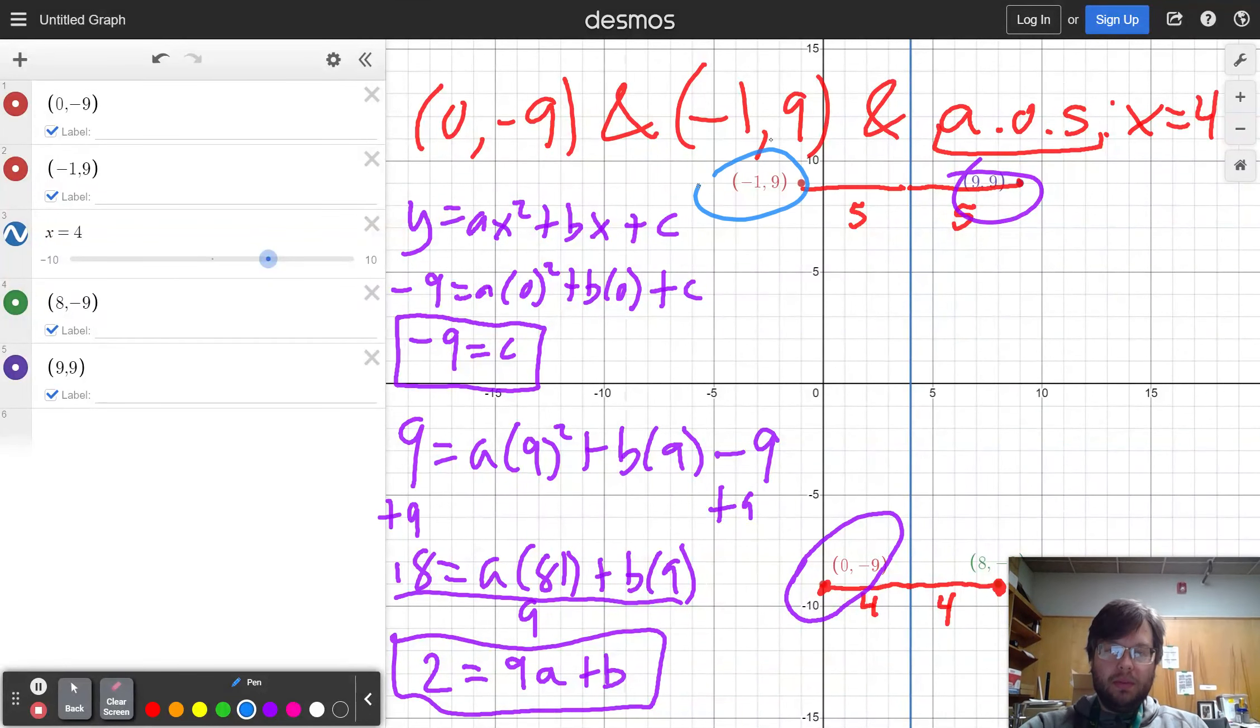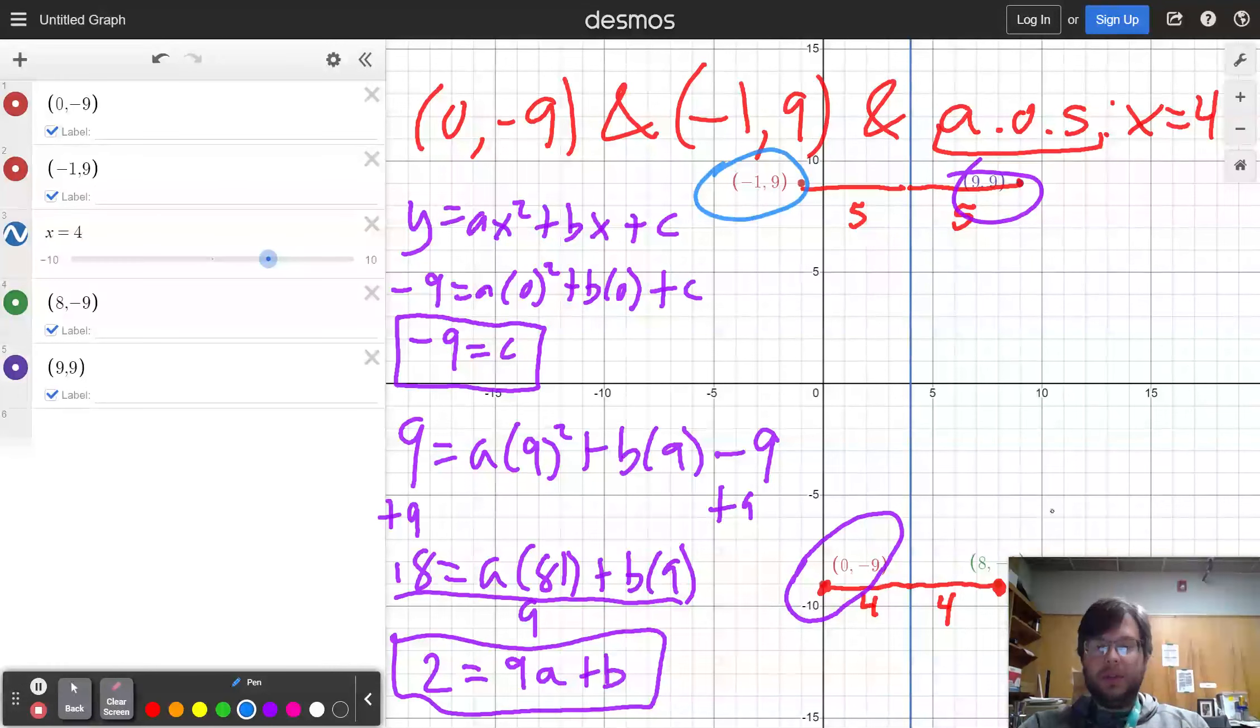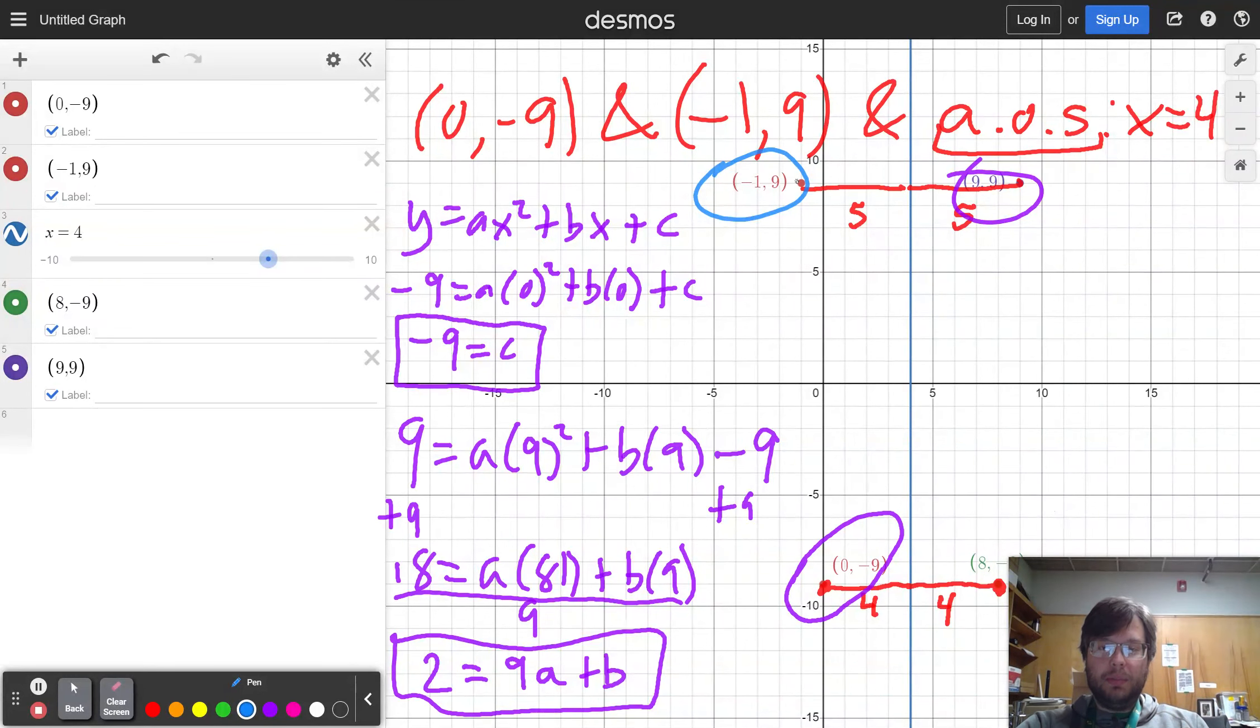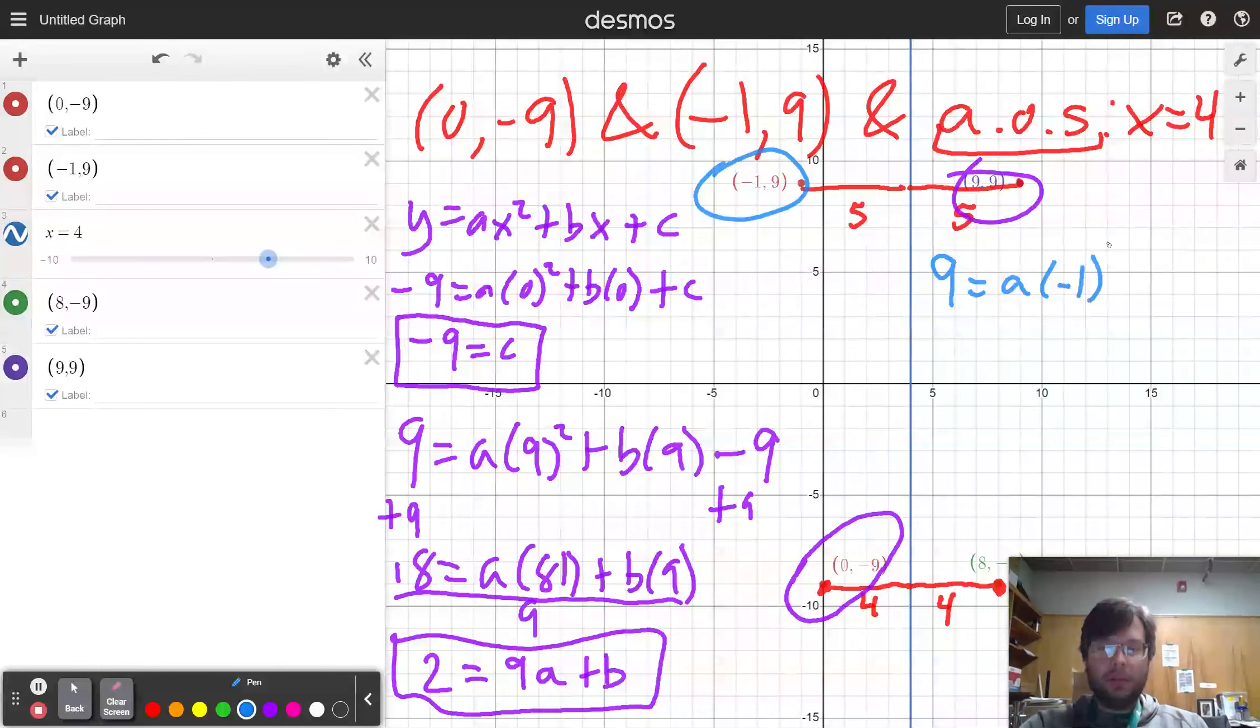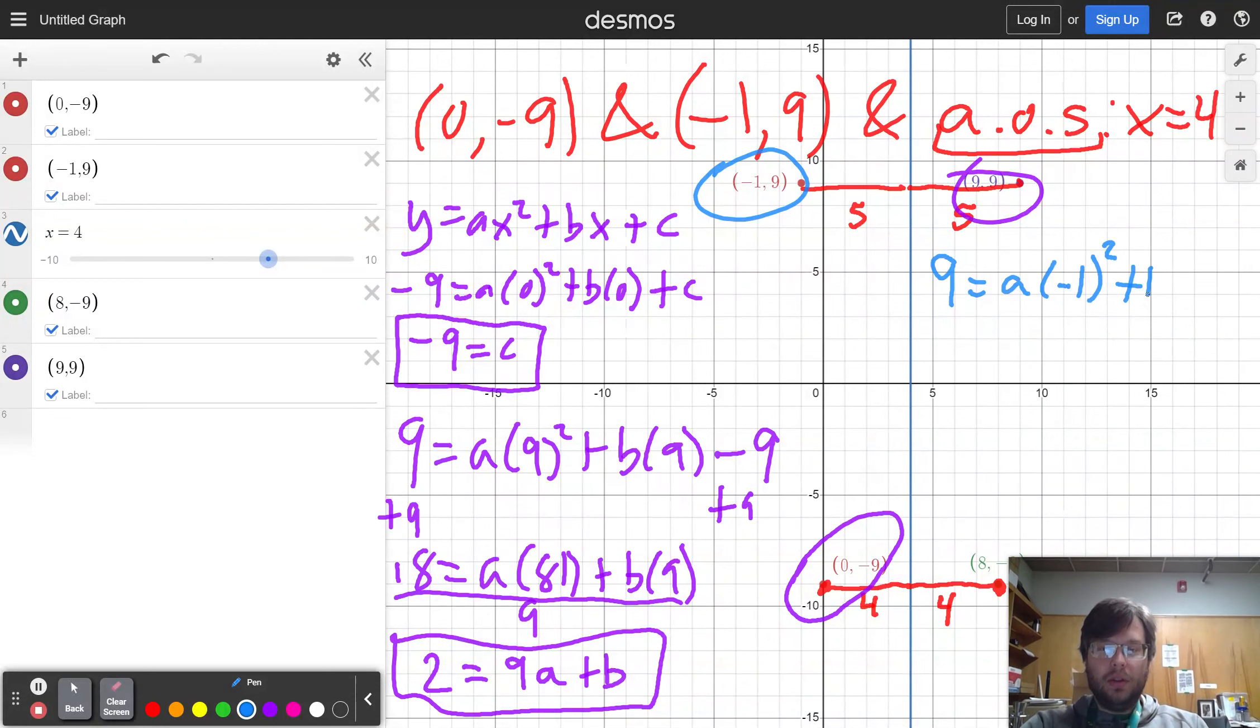I'm going to use this point. I could also use the other point. It doesn't matter. I'm just going to use this point up here on the top left to get the equation 9 equals a times negative 1 squared plus b times negative 1 minus 9.